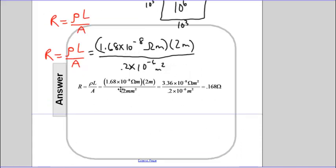Resistivity is 1.68 times 10 to the negative 8. The length is 2 meters. The area will be 0.2 times 10 to the negative 6 square meters, which gives us, and it's not converted in the first portion, and then it is converted to meters squared. It gives us 0.168 ohms, and we can just double check our units.